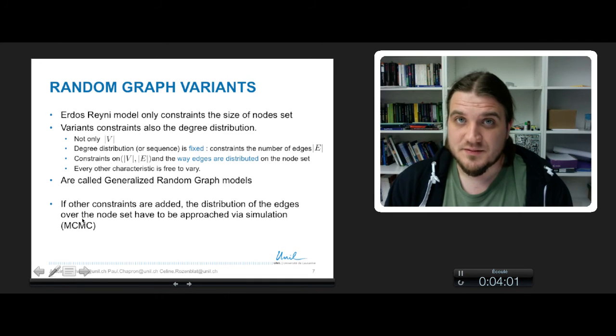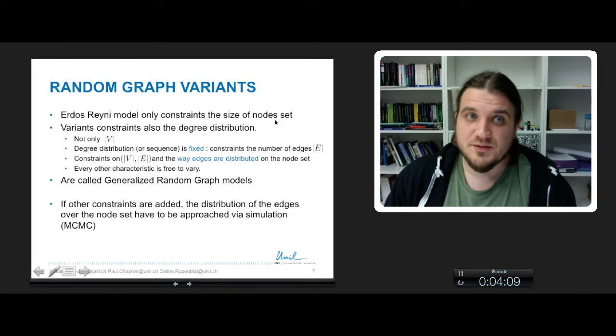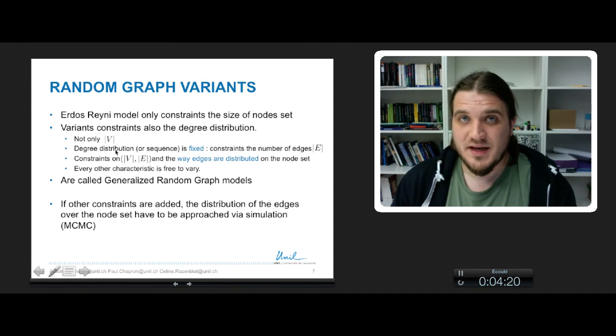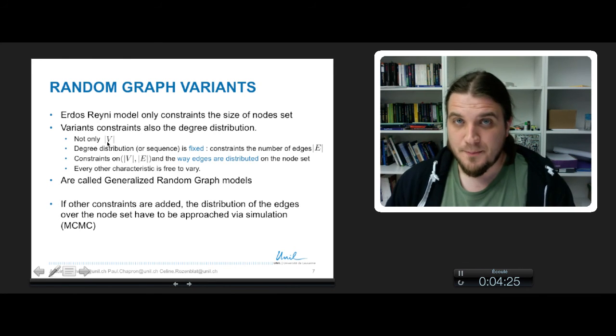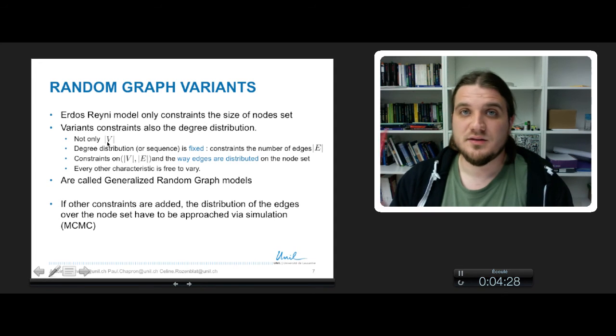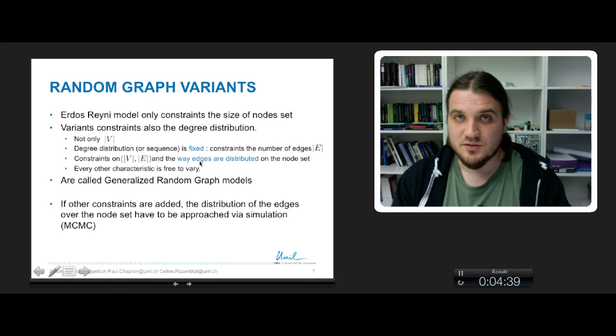Fortunately, there are some variants of this very simple model. So the Erdos-Renyi model only constrains the size of the node set. But variants of this model also constrain the degree distribution. So we have not only the size of v that is fixed, but also the degree distribution is given. So we say, we want a network of the size of v nodes, but we want the degree distribution to be this way. So by doing this, we have constraints on the number of vertices, the number of edges, but also the way edges are distributed among the nodes of the network.